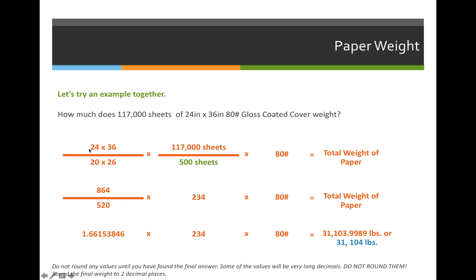When we simplify, 24 times 36 is 864, and 20 times 26 is 520. When we divide 864 by 520, it comes out to 1.615384.